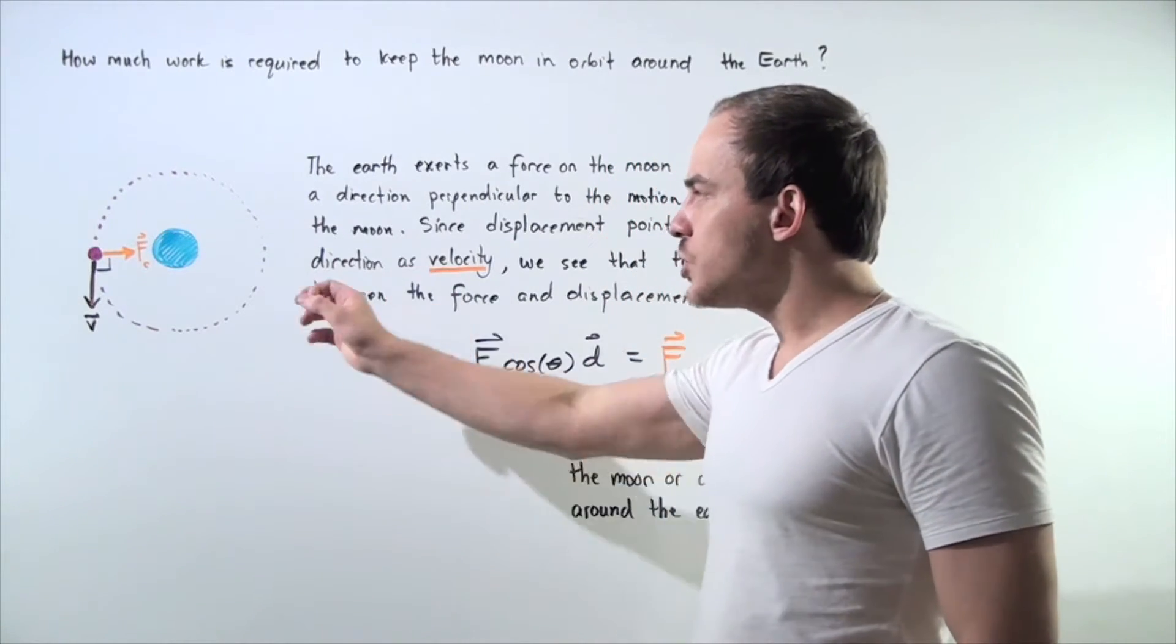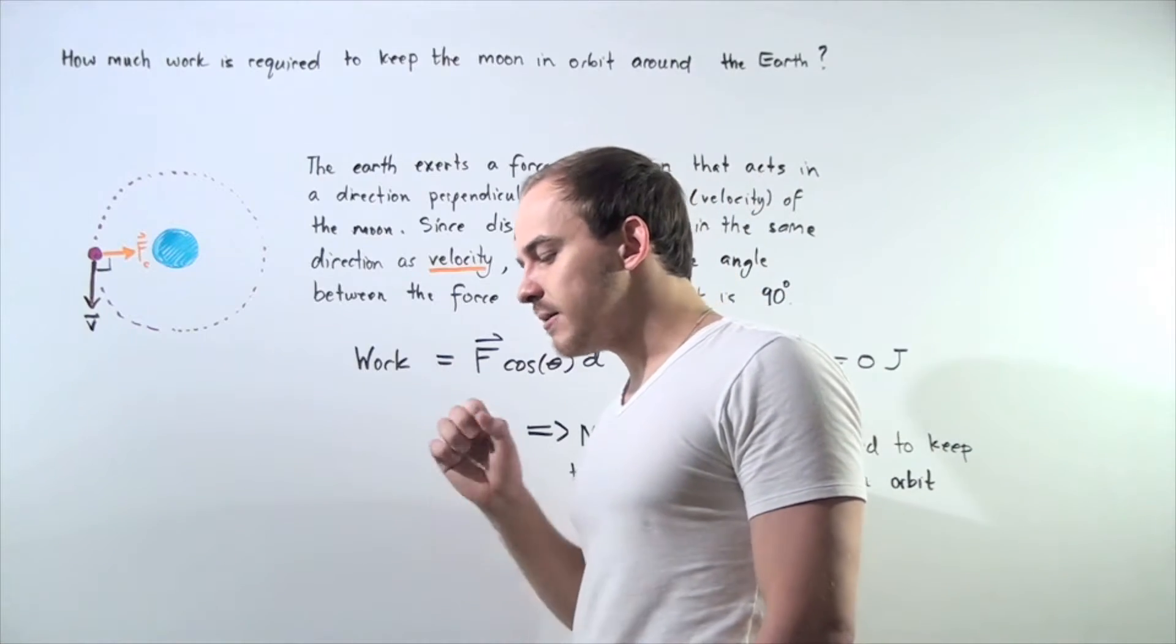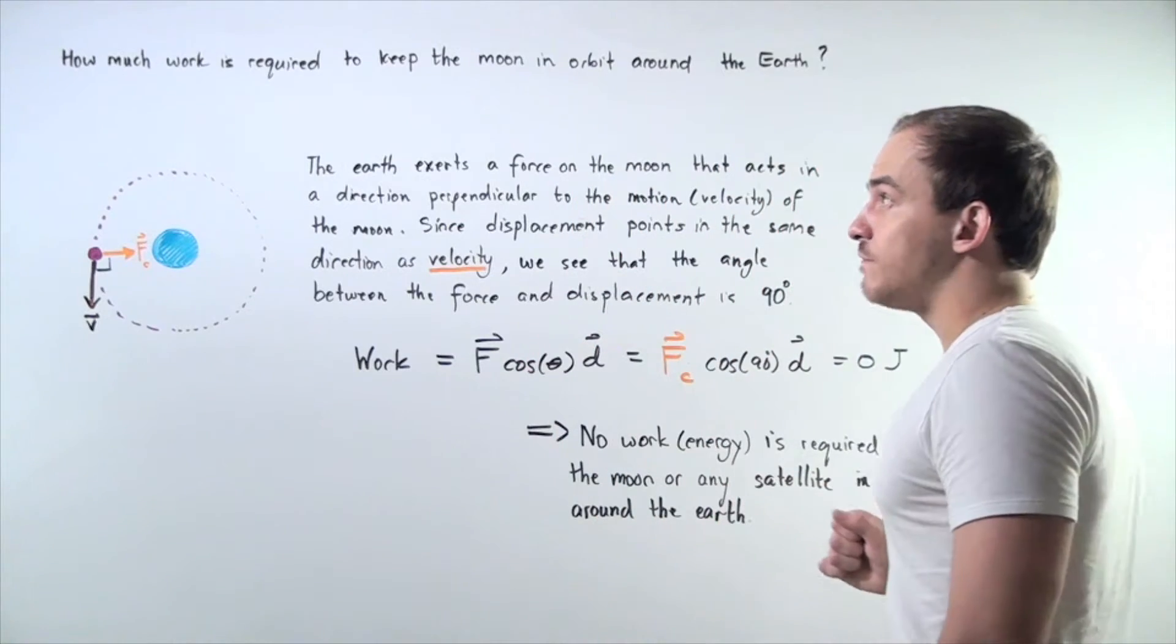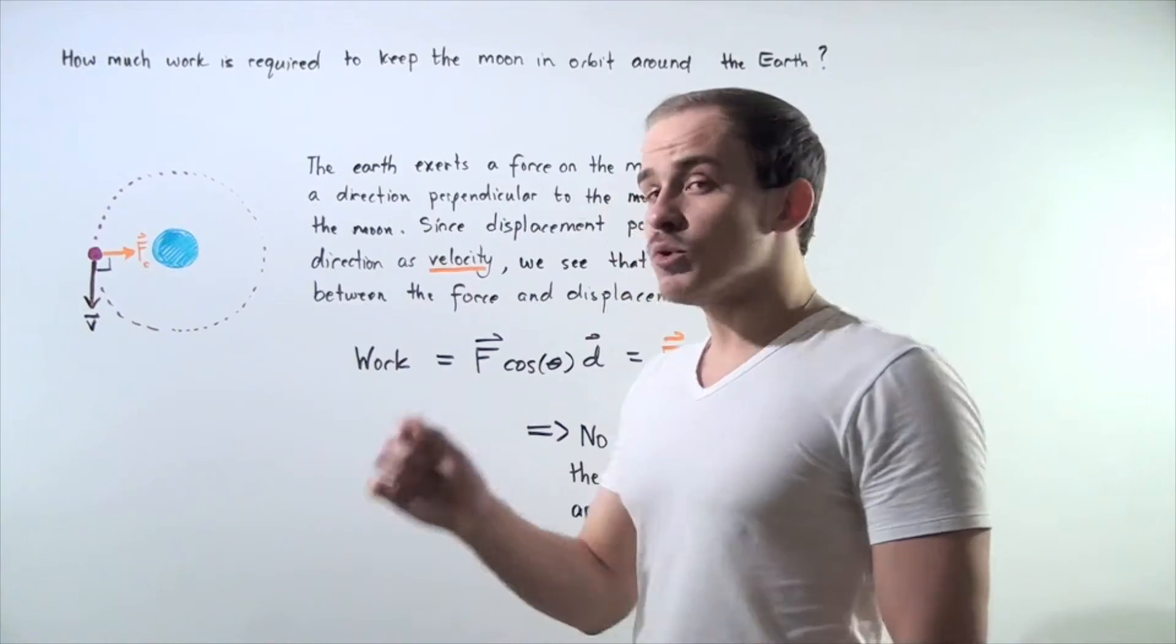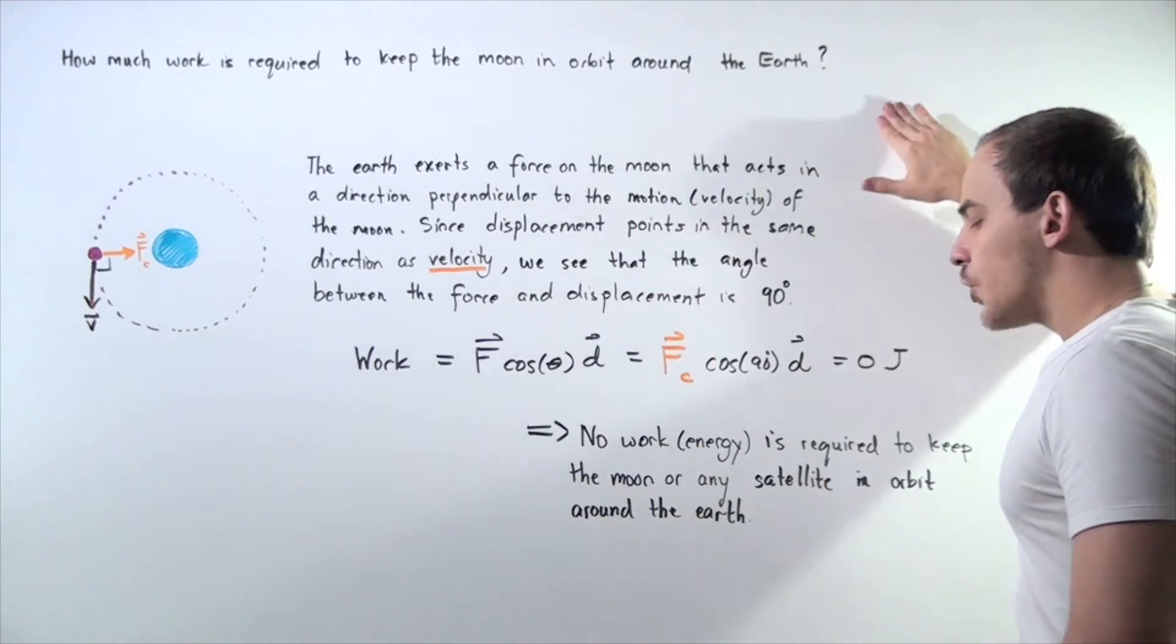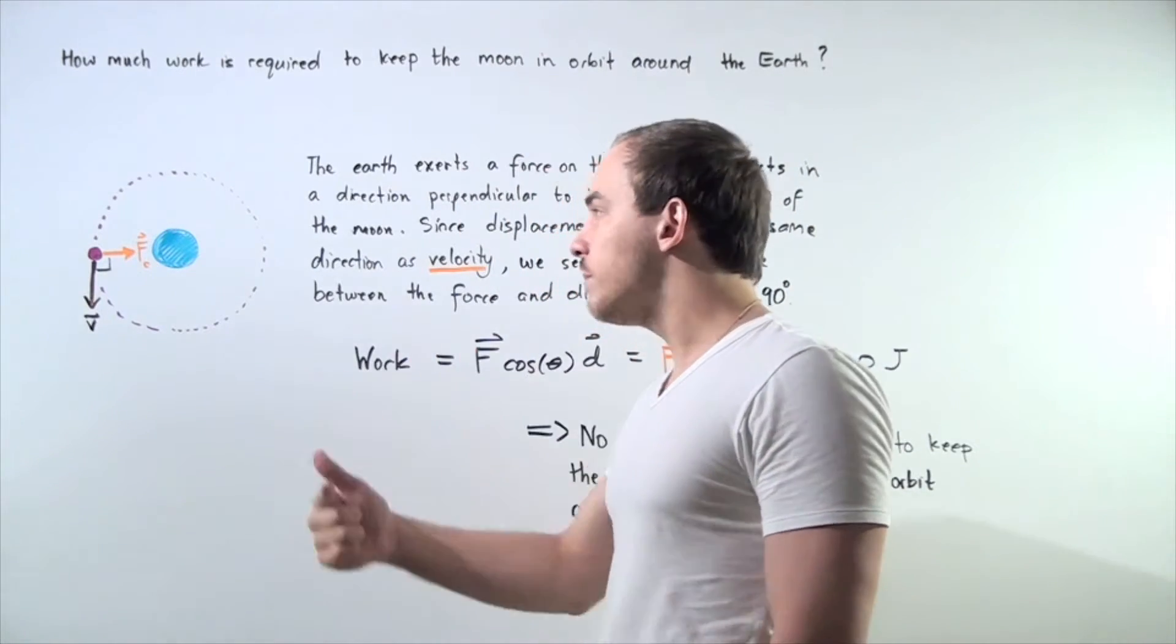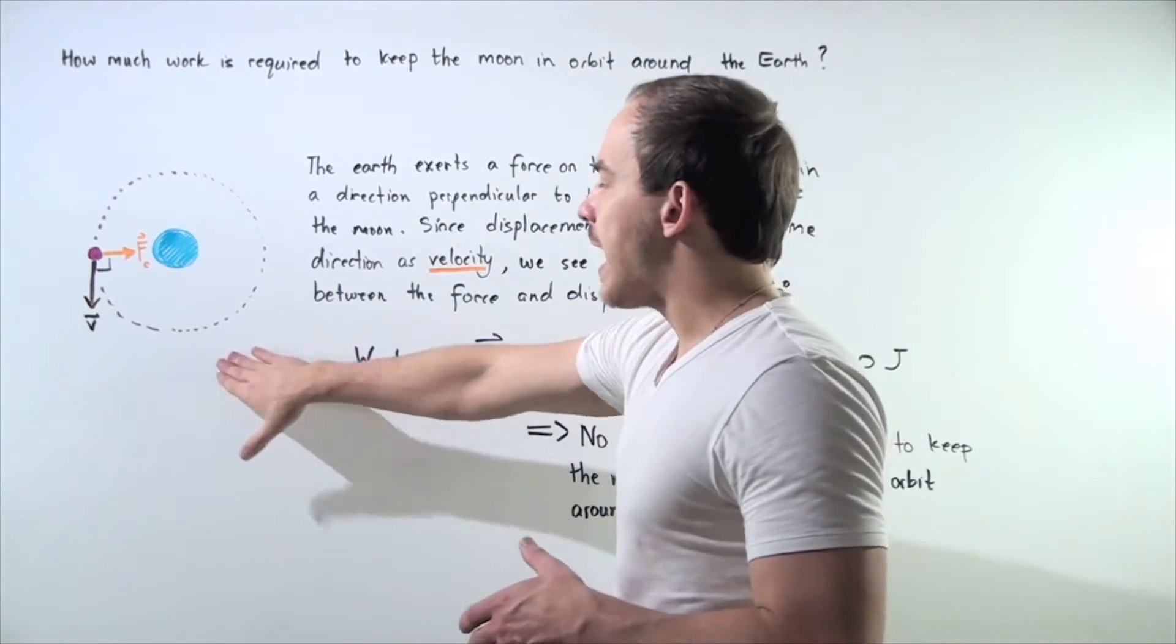Let's examine the motion of the moon around the earth and make the assumption that the moon is undergoing uniform circular motion. So let's ask and answer the following question conceptually: How much work is required to keep the moon in orbit around the earth, and in general, how much work is required to keep satellites orbiting our earth?